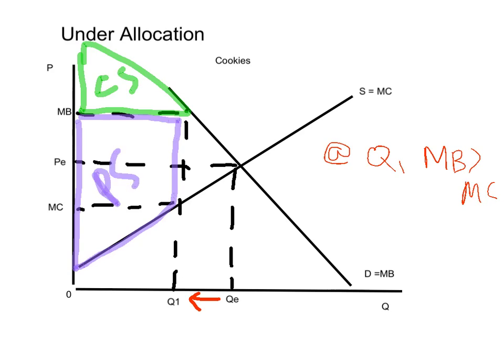We can tell that resources are under-allocated because there is an area of welfare that is lost, or deadweight loss here. Society would be better off with more resources allocated to producing cookies. We have a welfare loss because of the disequilibrium.